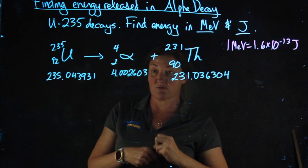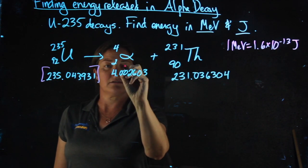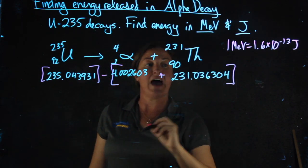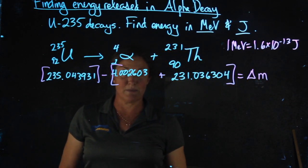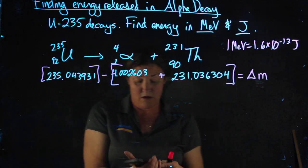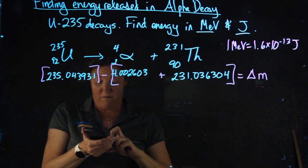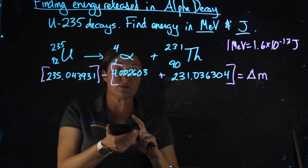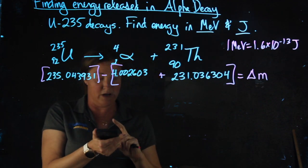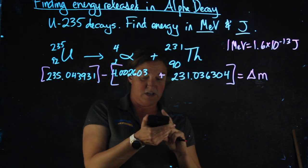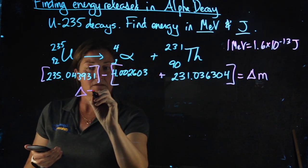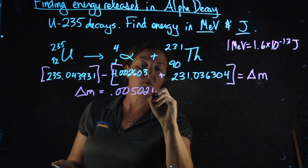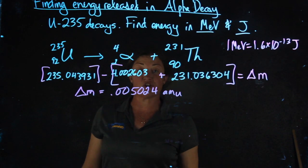If I want to look at the mass changes in this reaction, I want to compare the mass of my reactants to the total mass of products. I'm going to find the difference between that amount and that amount, and that will give me my mass decrement. I'm going to punch these into the calculator super carefully, 235.043931 minus the sum of 4.002603 plus 231.036304. My mass decrement, 0.005024 amu, were converted to energy over the course of this reaction.